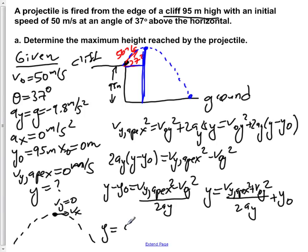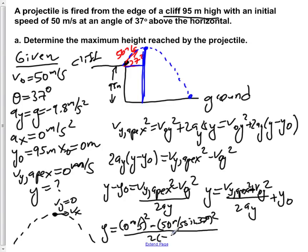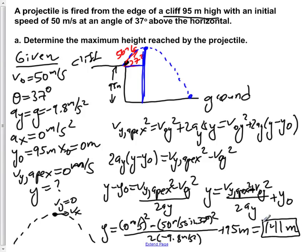Plugging in values: Vy_apex is 0, Vy is 50 sin(37°) meters per second, Ay is negative 9.8 meters per second squared, and y₀ is 95 meters. Calculating this gives y equal to 141 meters. So the highest point reached in the trajectory is 141 meters above ground level.